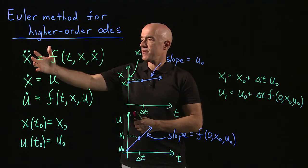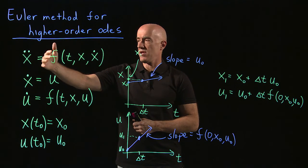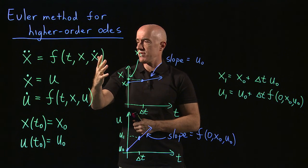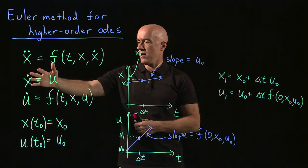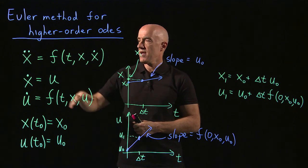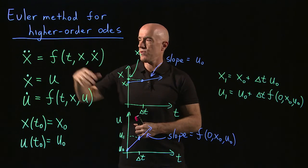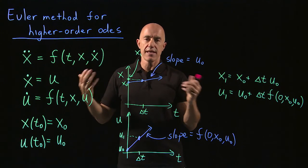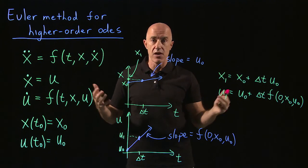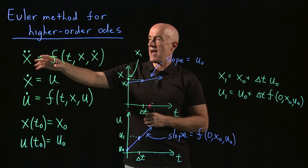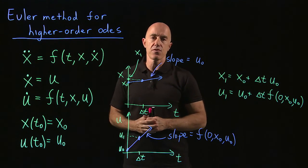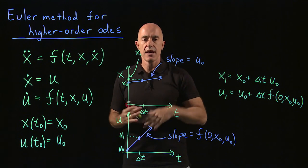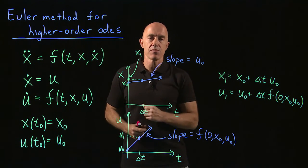So we see using Euler method, we can solve any general second order differential equation as a system of two first order equations. And you can generalize this to third order equations or fourth order equations. Or say if you're doing the problem of planetary motions, you may have three second order equations, and you can write that as six first order equations. And to integrate that, you would do all six simultaneously.